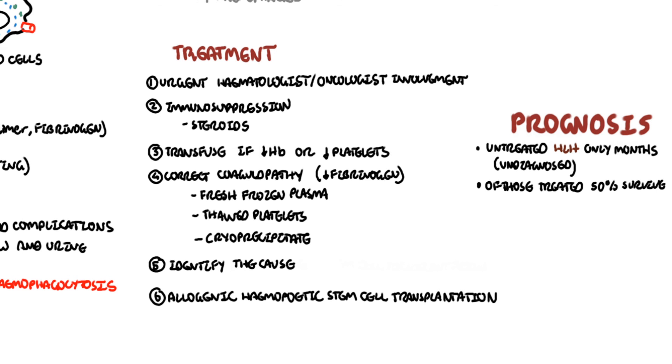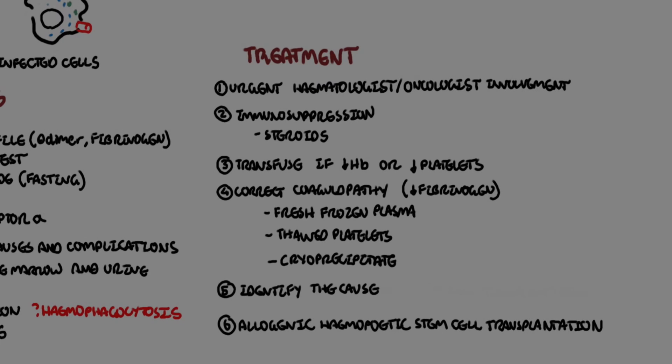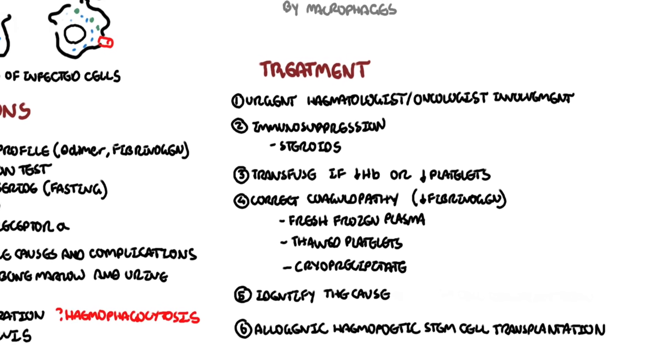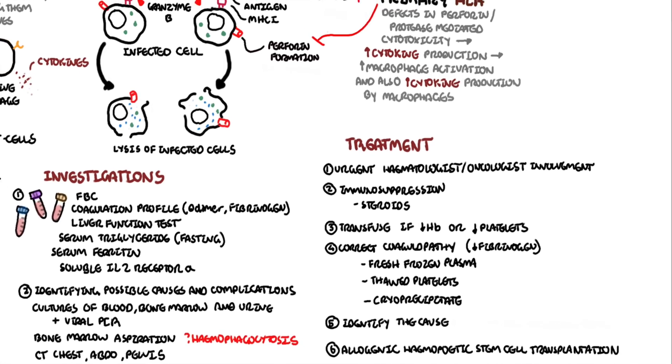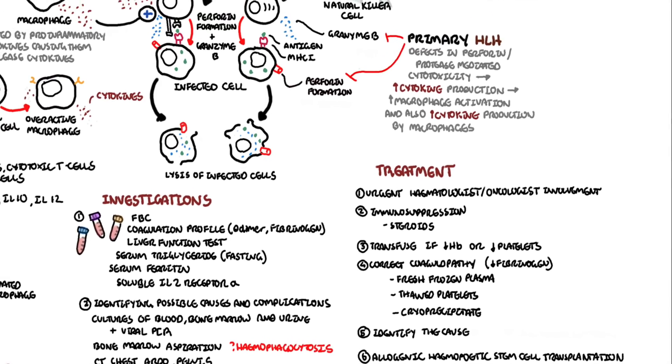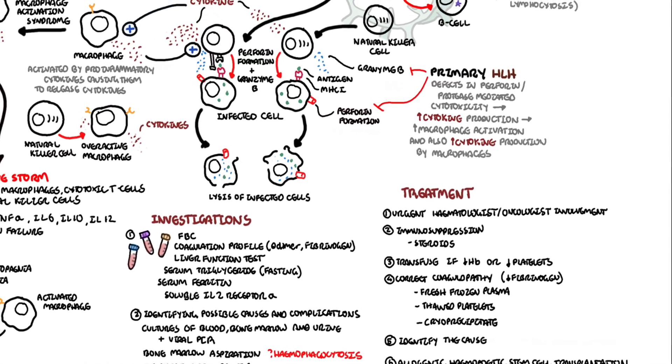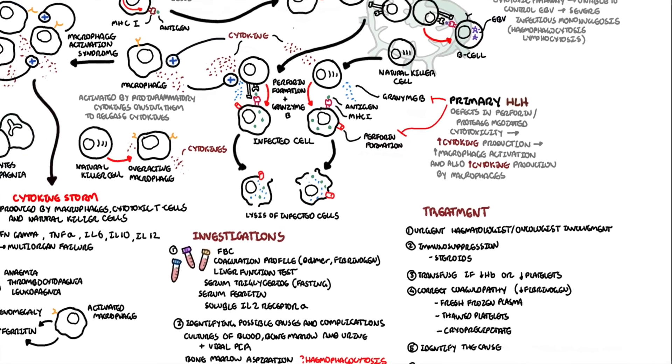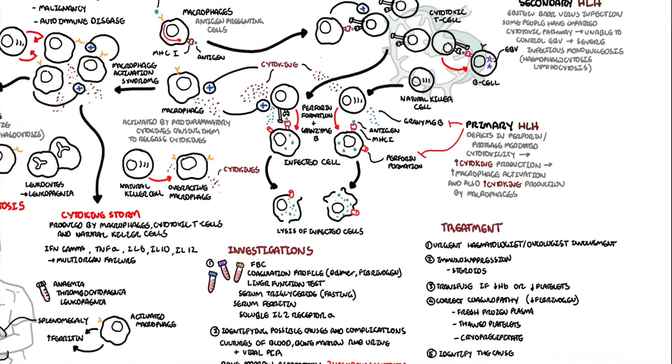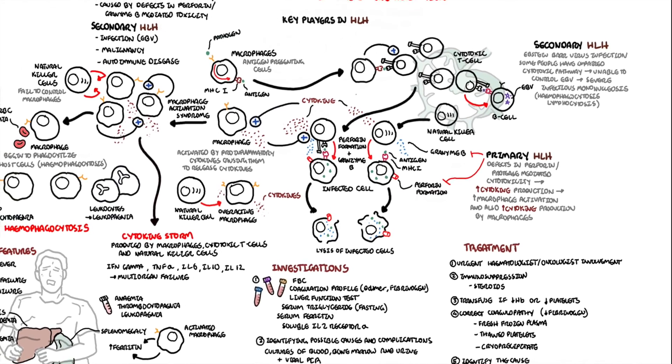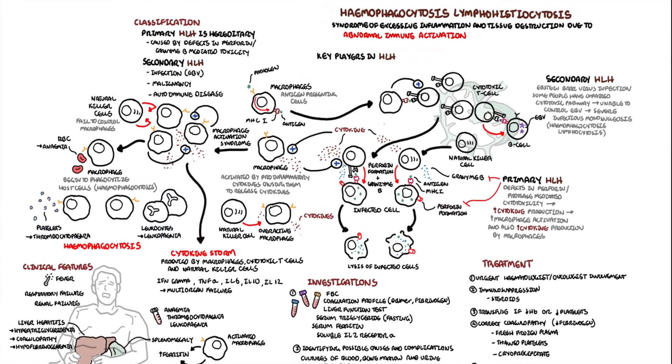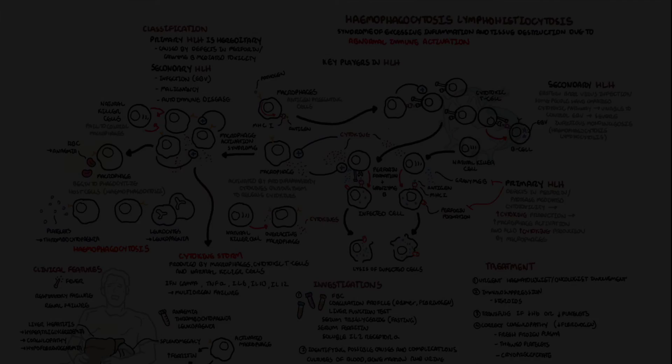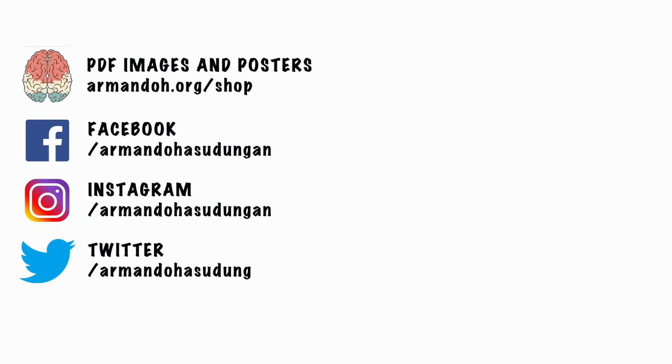Thank you for watching. I hope you enjoyed this video on hemophagocytic lymphohistiocytosis. In summary, it is a condition where you have hyperactivation of the immune response involving macrophages as well as cytotoxic T lymphocytes. This will result in a cytokine storm, which will cause multi-organ failure, but also the activated macrophage can start engulfing other things in your body, such as your red blood cells, hence hemophagocytosis.